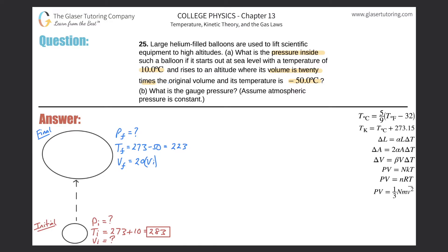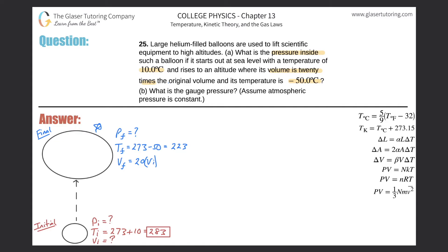The initial volume is not given. After the balloon travels up, it has some final pressure we need to find. The final temperature is negative 50 degrees Celsius, converted to Kelvin. The final volume is 20 times the initial volume. Anytime you have an initial set and a final set of conditions, use the combined gas law — there's a general video on that linked in the description.